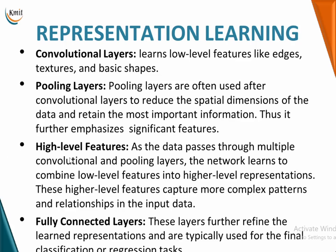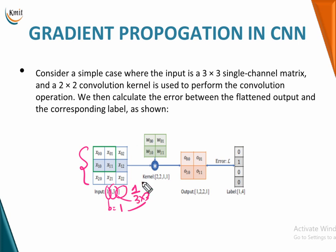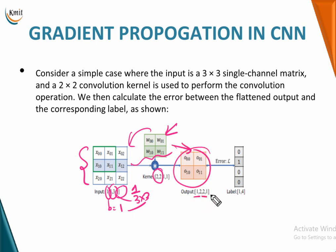Now let's talk about gradient propagation in CNNs. We consider a simple case with a 3×3 input channel matrix and a 2×2 convolutional kernel. The input image has batch size B=1, the image size is 3×3 with one activation map, and the kernel is 2×2. After convolution, the output is of shape 1×2×2×1 — a 2×2 feature map.